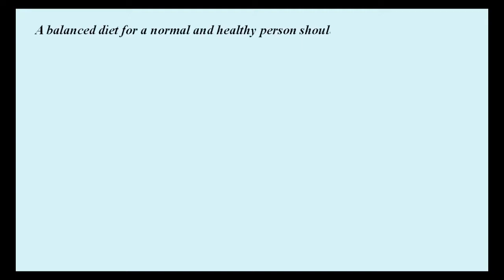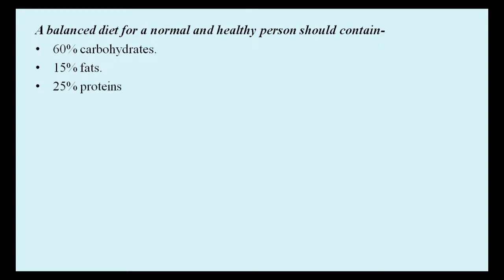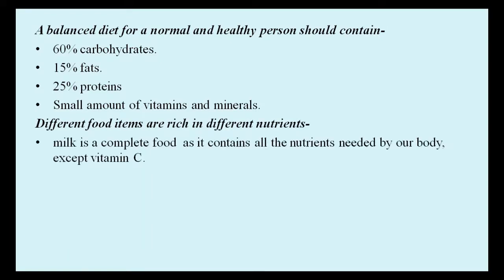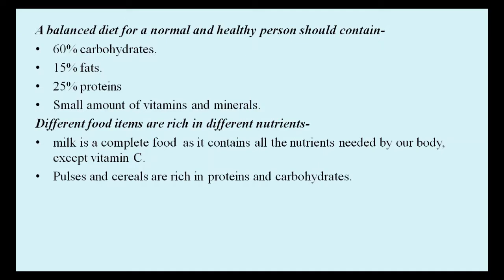A balanced diet for a normal and healthy person should contain 60% carbohydrates, 15% fats, 25% proteins and small amount of vitamins and minerals. Different food items are rich in different nutrients. Milk is a complete food as it contains all the nutrients needed by our body except vitamin C. Pulses and cereals are rich in proteins and carbohydrates.